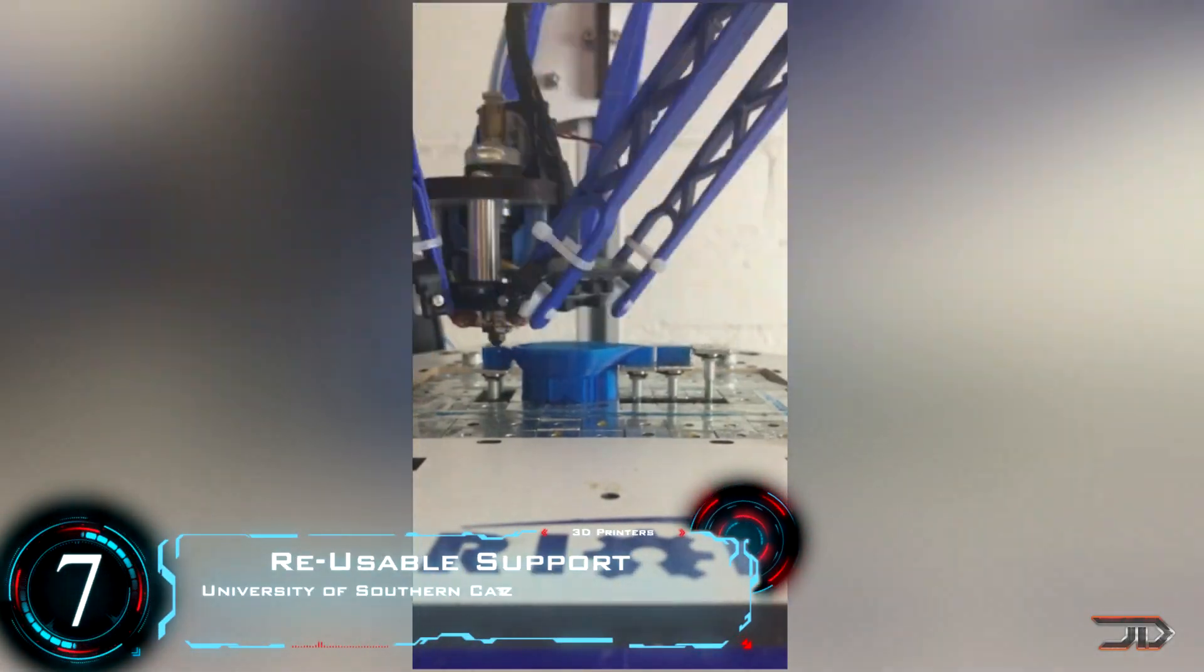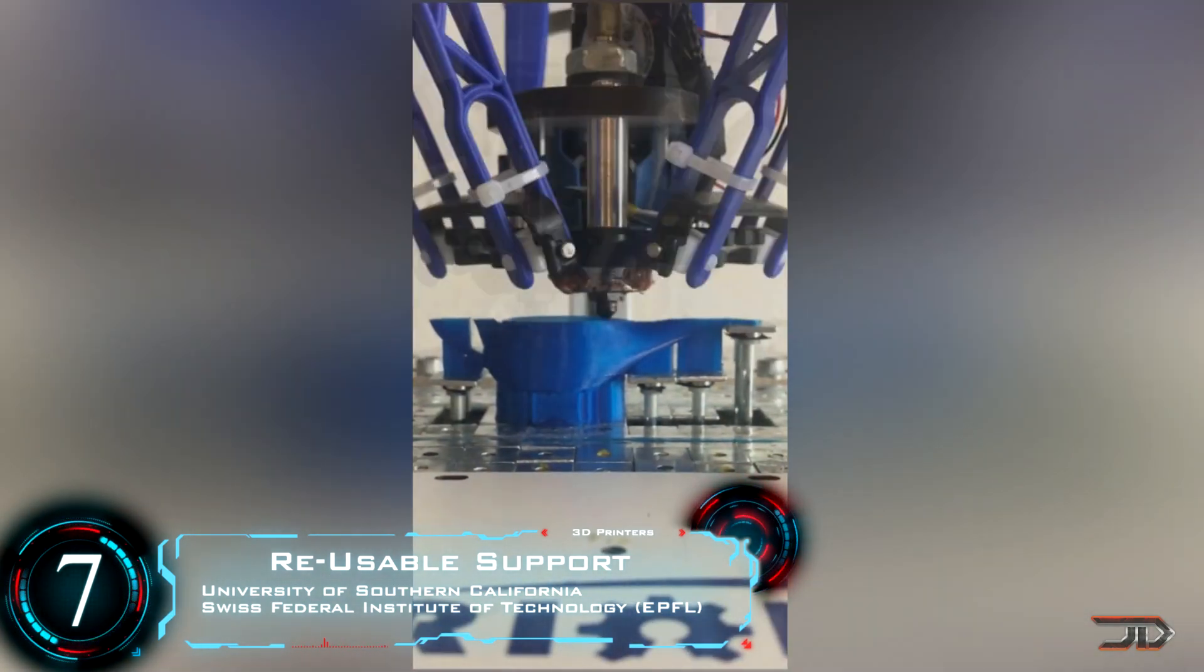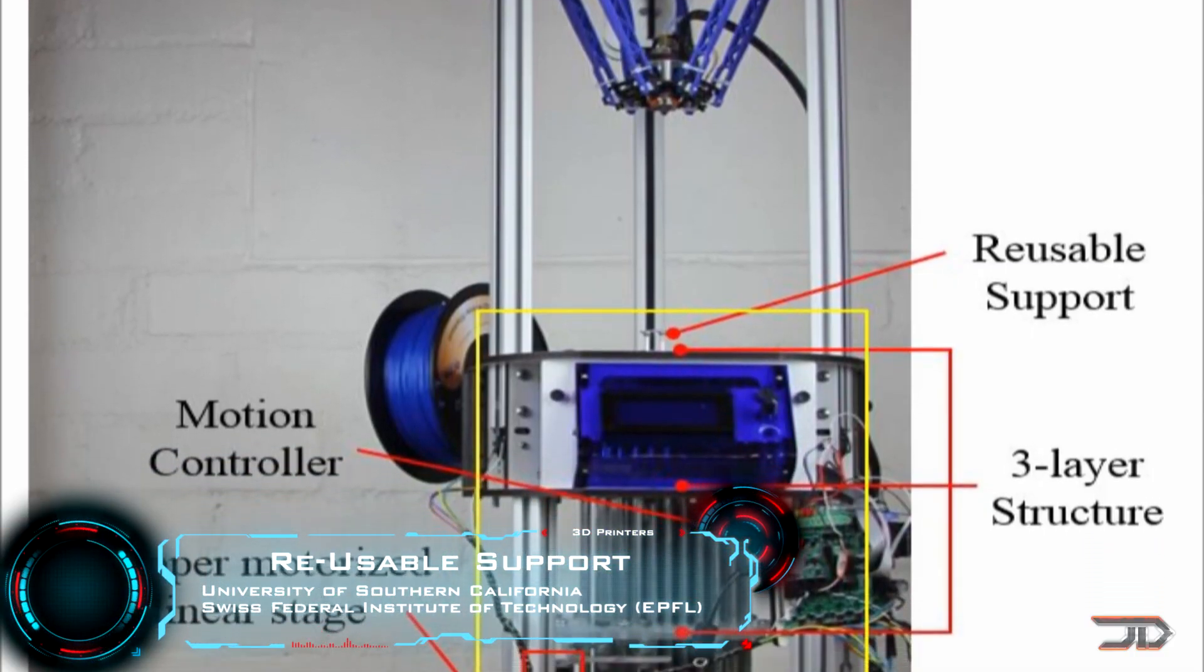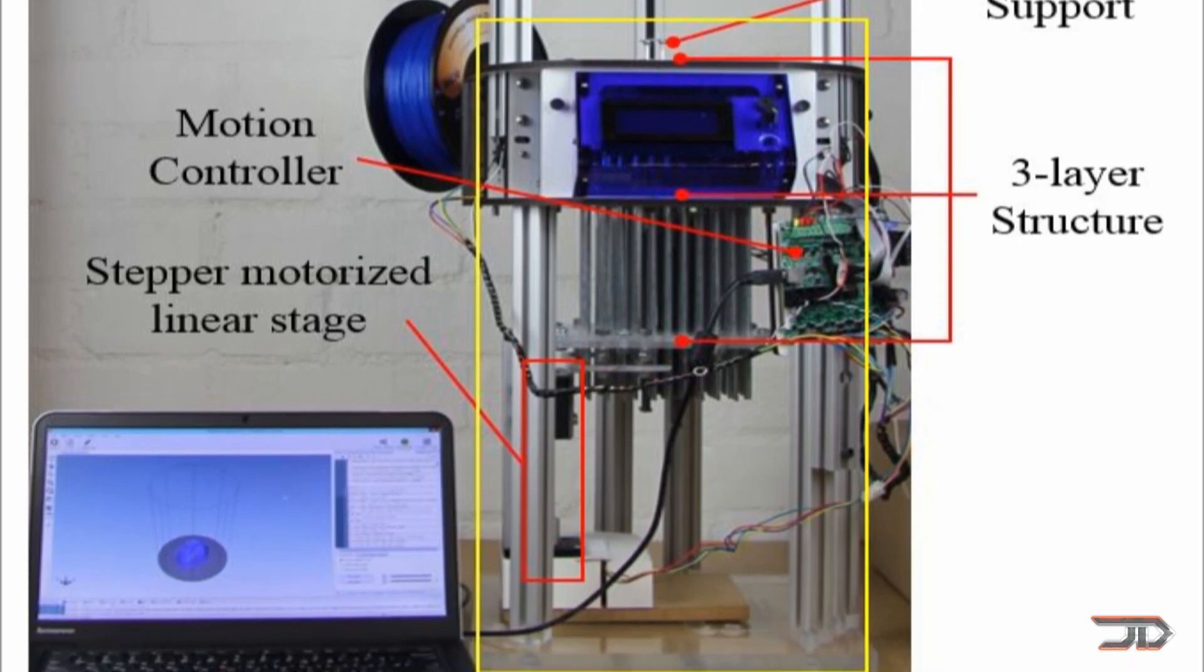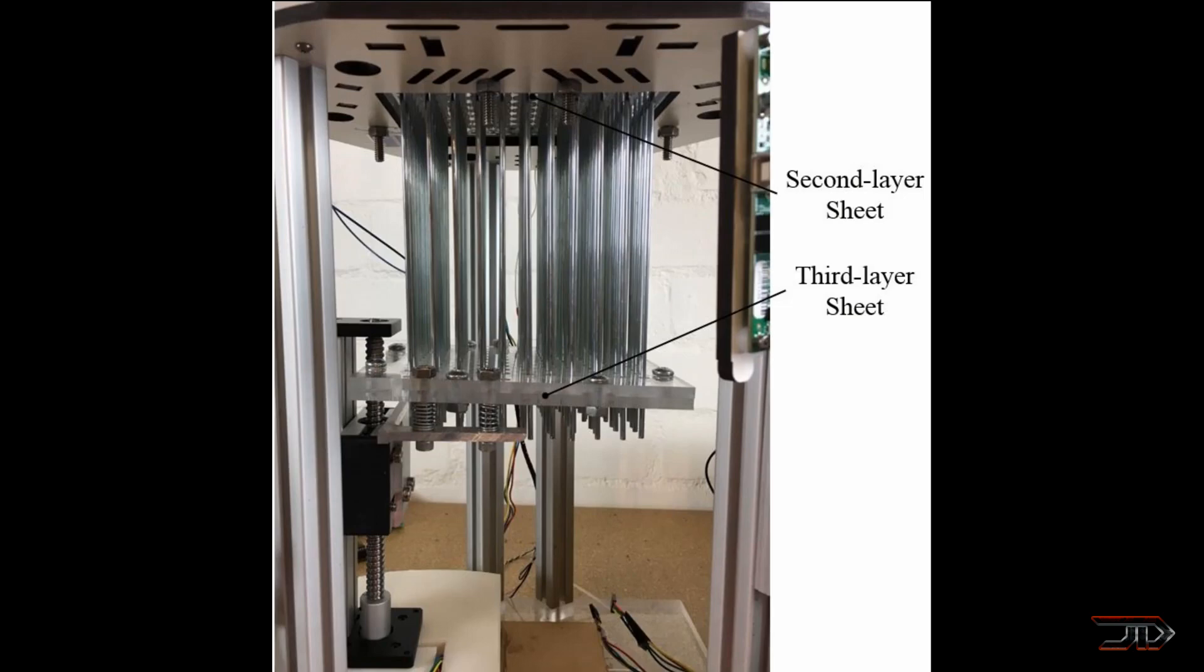Now FDM printers can build objects with overhangs, but they usually need to print extra supports which take time and material. So the University of California has tackled this problem with an adjustable bed platform. Once each pin is at the correct height, they are locked into place using a magnetic disc and a ring combination.